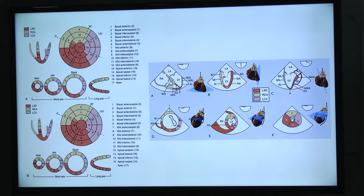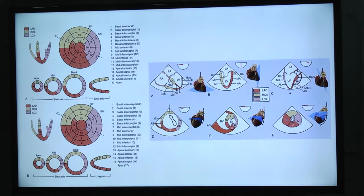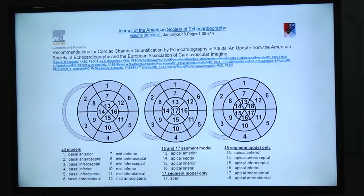The next step is to perform a regional analysis differentiating each segment. It can be done only by multiple views, and classifying these segments can be a little confusing because there are different segmentation models — 16, 17, and 18 segment models — and they differ in the way they start counting. But in 2015, ASE and the European Association of Cardiovascular Imaging published an update of their recommendations for cardiac chamber quantification, suggesting use of the 17-segment model starting from the basal anterior wall.